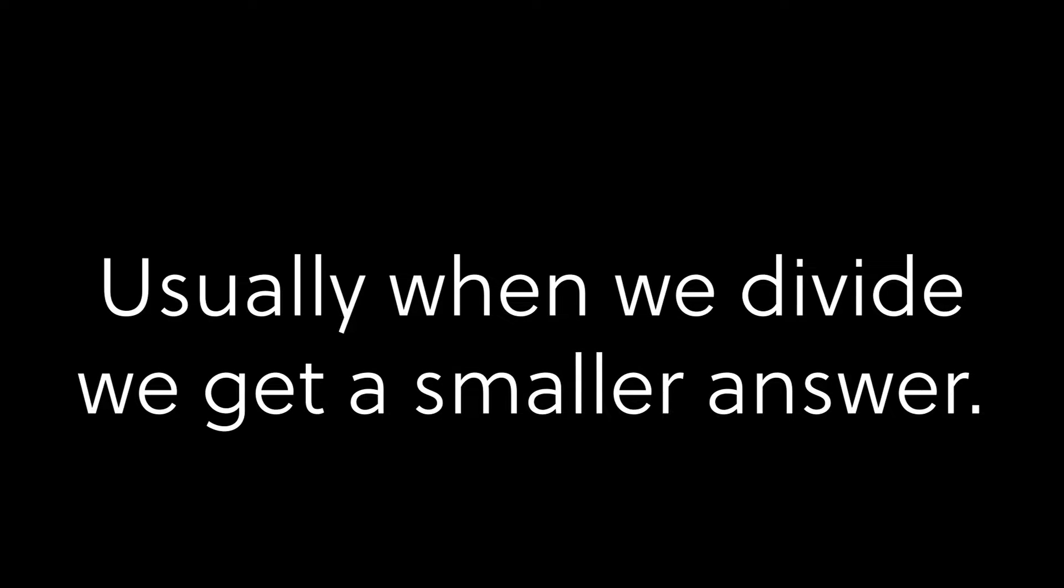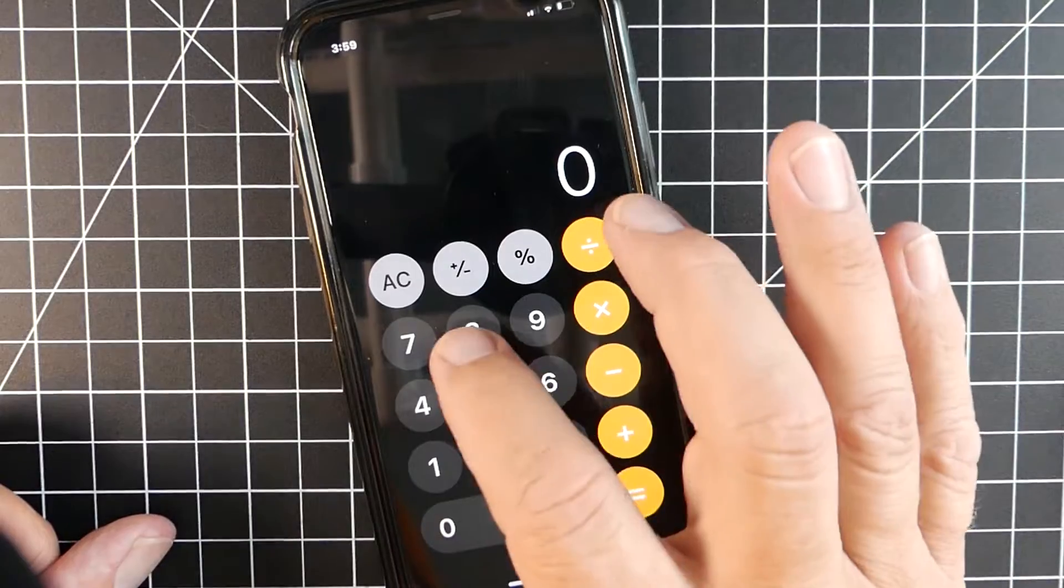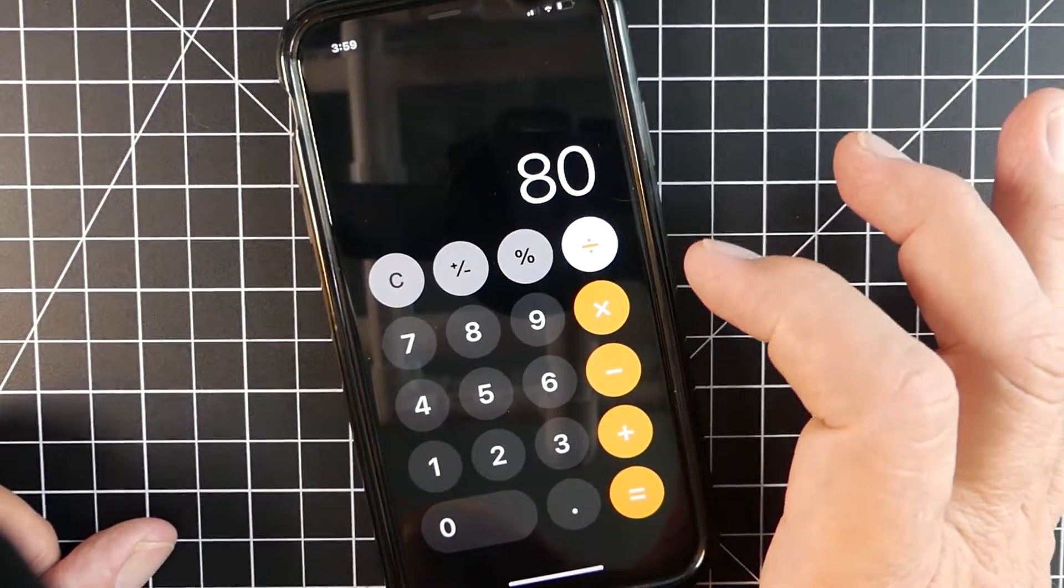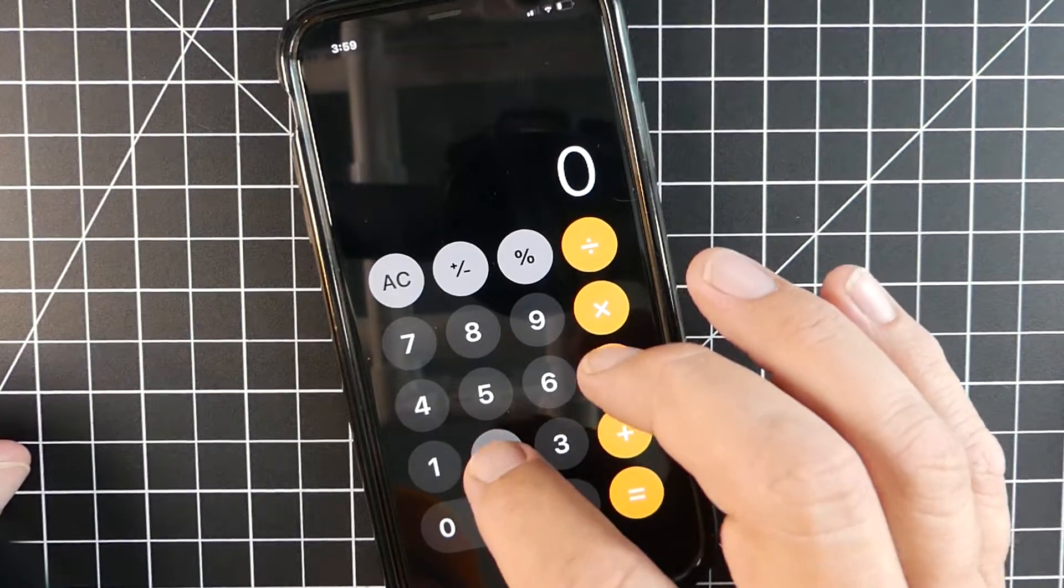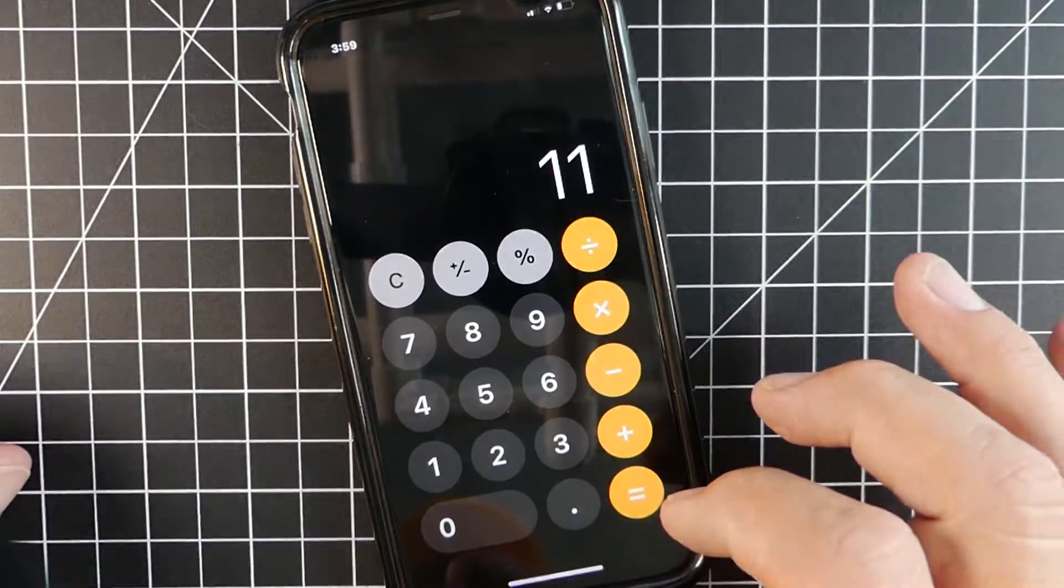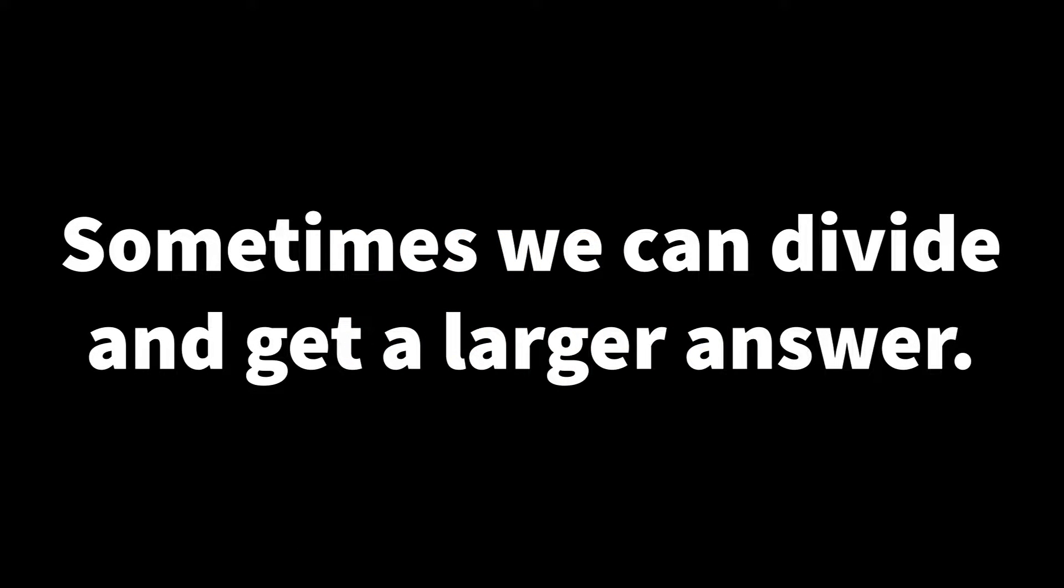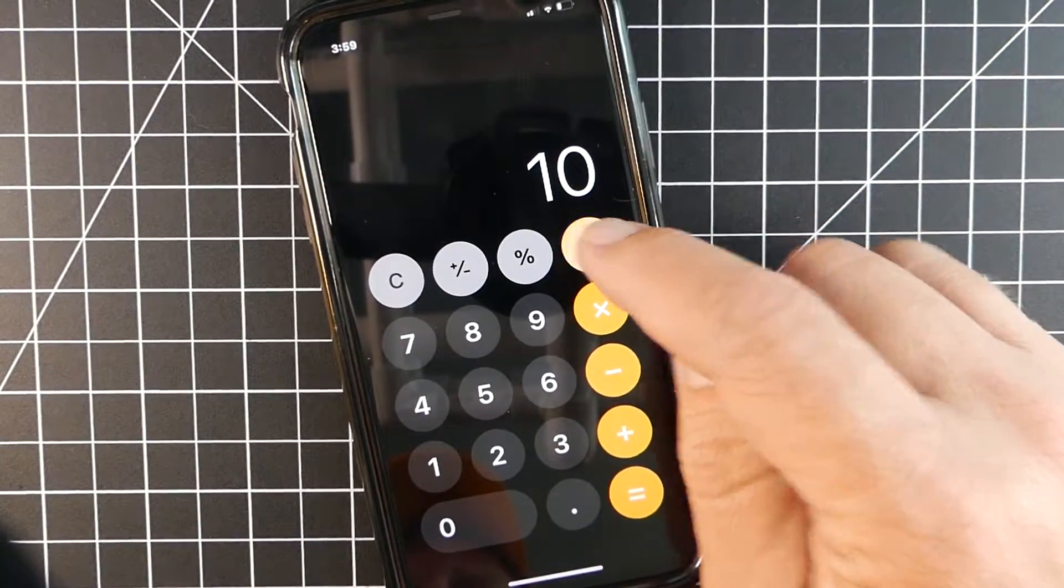When we think of division we usually think of taking a large number, dividing it, and getting a smaller number. This is pretty common. For example, if we divide 80 we end up getting 10 as an answer, or in this problem we start with 22, we divide it and we end up with 11. But sometimes when we divide we actually can get a larger answer and this is confusing for a lot of kids.